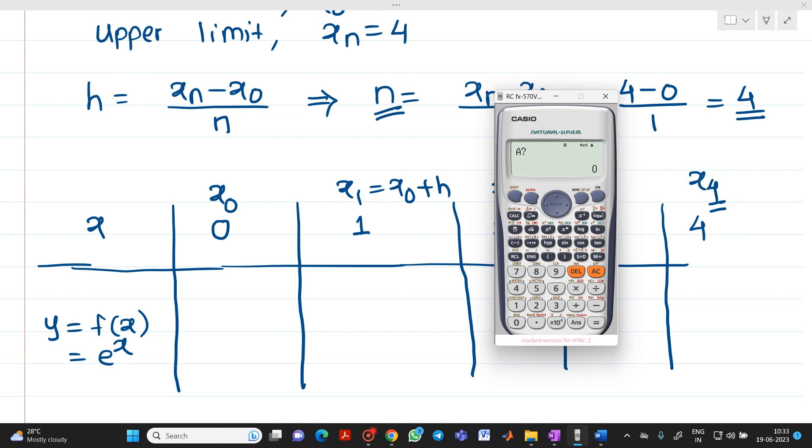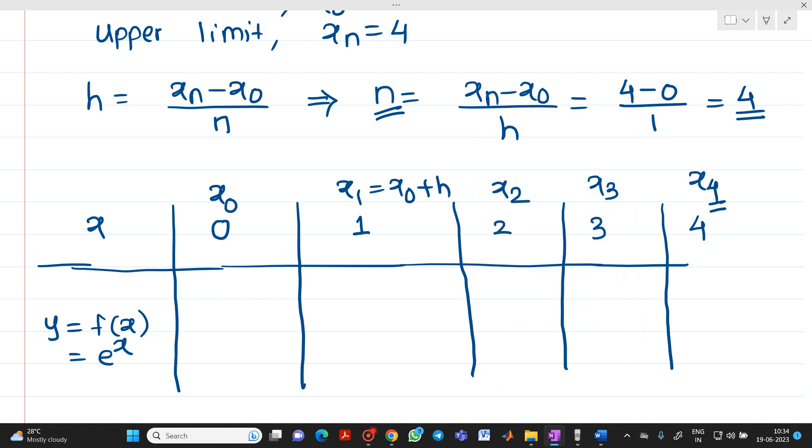Second value at x equals 1 gives 2.7182. We will write answers directly. This will be 1, then 2.7182, then 7.3890, then 20.08, and finally 54.598. So these are your y0, y1, y2, y3, and y4 values.